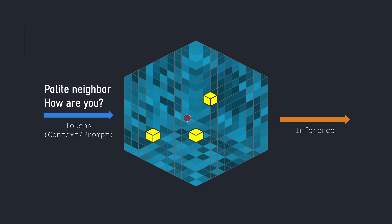The AI uses those lighthouses — the waypoints that we've given it with our input — to find what should be the proper response. 'Polite' and 'neighbor' and 'how are you' are phrases, tokens that it's seen before, and that guides it in a direction of what probably should come next. So 'polite neighbor, how are you?' — it travels and might say, 'I'm fine, thank you.' Our words nudging it in a particular direction within its memory.